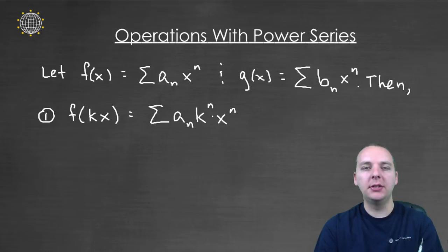The first operation is what happens if we take the x out of our power series and we swap it with kx. What changes will happen? We'll just take that x out on the right hand side and switch it with kx. kx all to the n would be k^n times x^n. So this is how you do this operation.